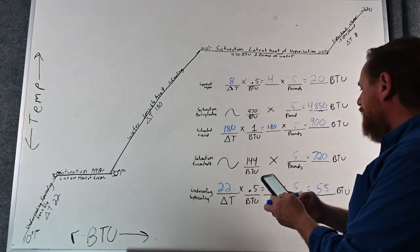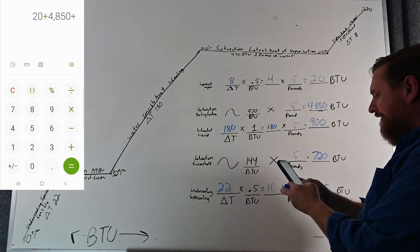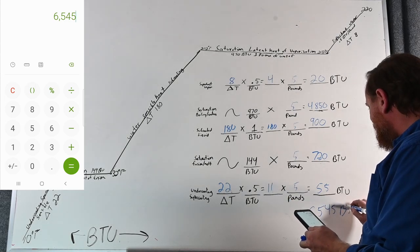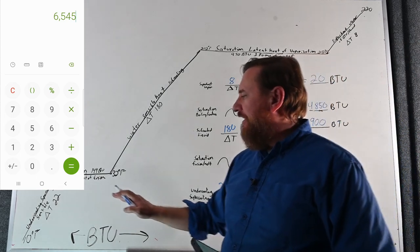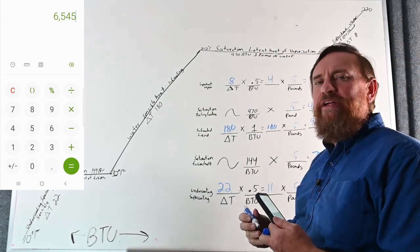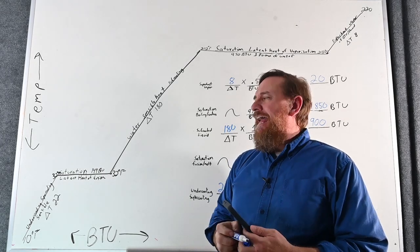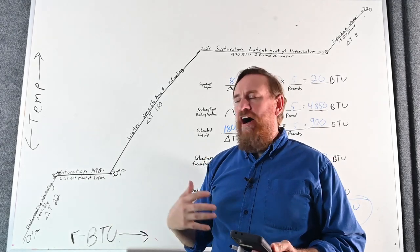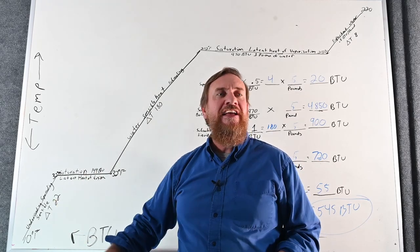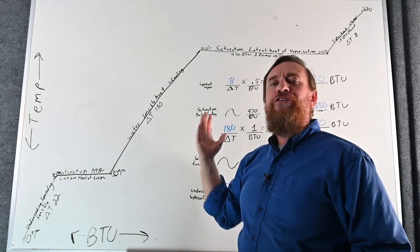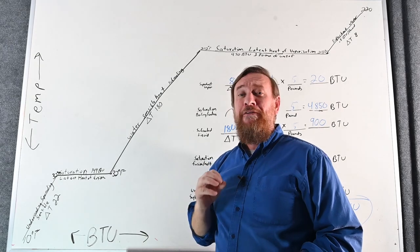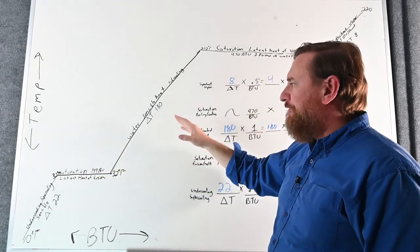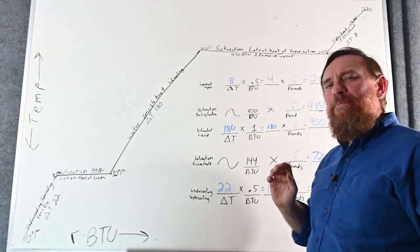Now we add them all together: 20 + 4,850 + 900 + 720 + 55 = 6,545 BTUs of heat energy to take five pounds of ice at 10°F through all the steps up to 220°F superheated vapor. It's a longer route and not my preferred method, but both methods arrive at the same answer. Don't let this confuse you — this is simply about understanding the change of states and giving you a broader perspective of what's happening.